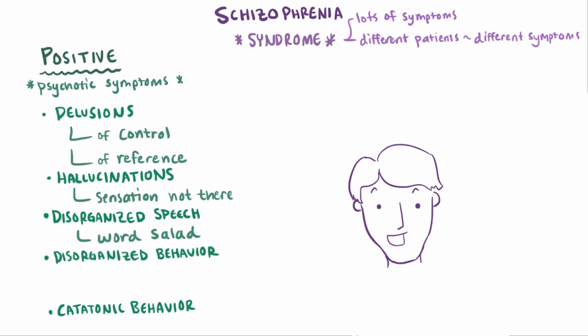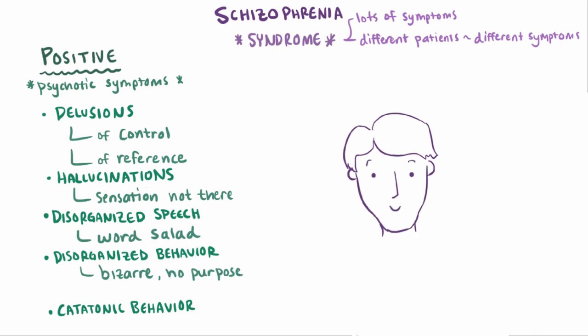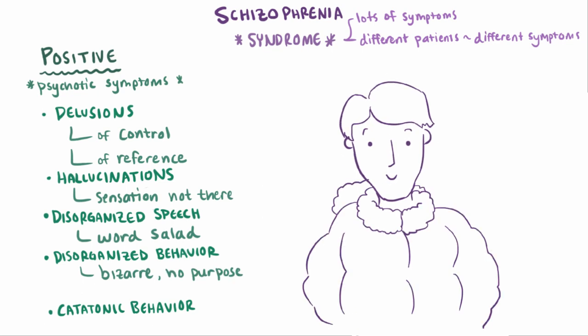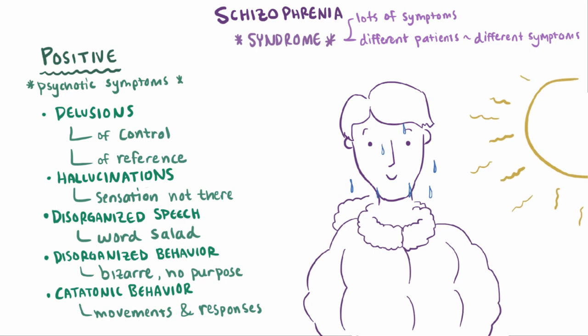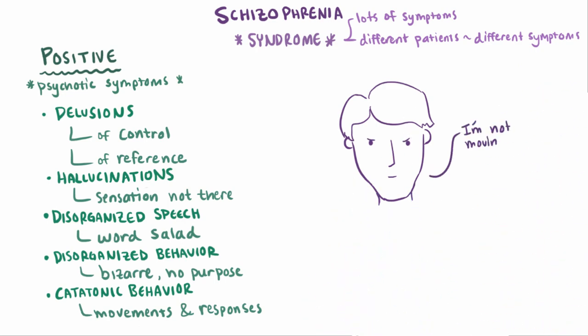Disorganized behavior could be like exhibiting some bizarre or silly behavior that's out of context and doesn't seem to have much of a purpose, like wearing multiple layers of jackets on a hot summer day. Also, sometimes their behavior is described as catatonic, which has to do with their movements, posture, and responsiveness — like being super resistant to moving or being in an unresponsive stupor.